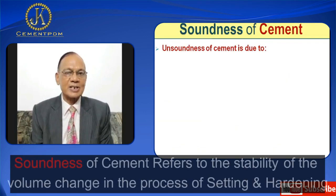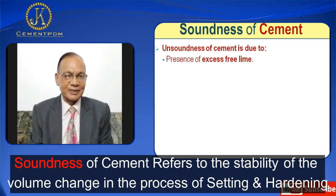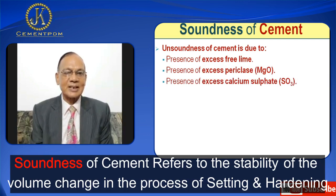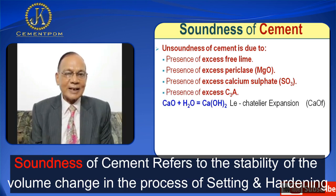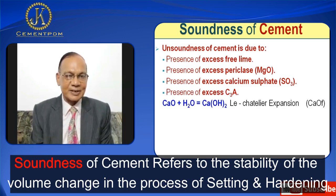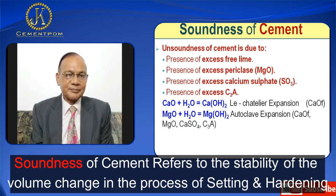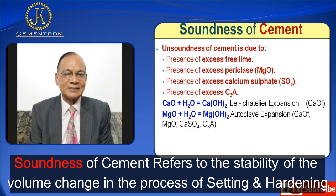Now I will discuss soundness of cement. Unsoundness of cement is due to three or four factors. Number one is presence of excess free lime. Number two is presence of excess periclase, that is MgO. Number three is presence of excess calcium sulfate, SO3. When free lime is present in the cement, it reacts with water and gives calcium hydroxide. Because of the density difference between CaO and calcium hydroxide — since density of calcium hydroxide is less — and since the reaction is taking place in the same mass, density equals M by V, mass being constant, if density is less then volume increases, and because of that, expansion in cement takes place.